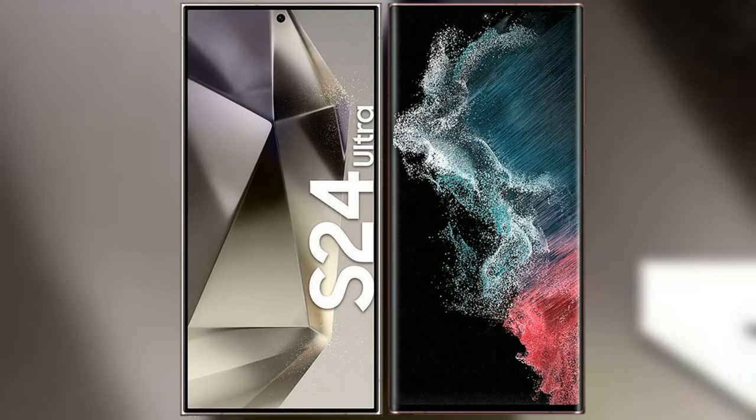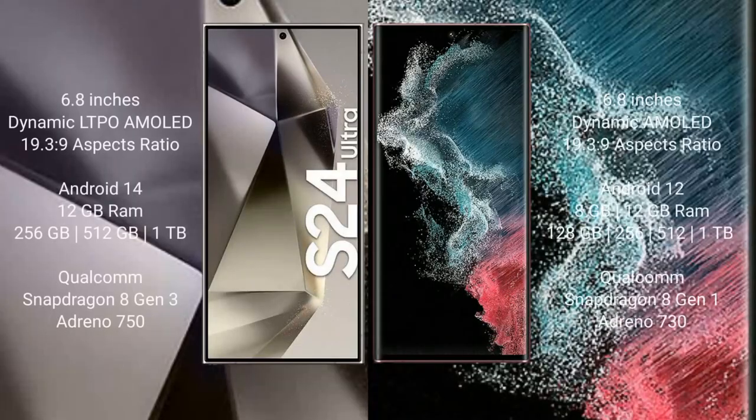I will compare the new Samsung Galaxy S24 Ultra with Samsung Galaxy S22 Ultra. The Samsung Galaxy S24 Ultra comes with a 6.8-inch Dynamic LTPO AMOLED display and Snapdragon 8 Gen 3. The Samsung Galaxy S22 Ultra comes with a 6.8-inch Dynamic AMOLED display and Snapdragon 8 Gen 1.